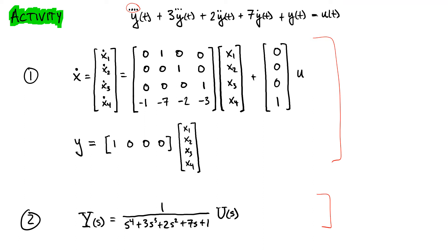One thing to mention as we look at this is the fact that we have a fourth-order differential equation. The order of that differential equation — I have one differential equation and it's order four — and that is why this ends up being a vector-valued differential equation that has four states in it, and it's also why the highest power in the denominator of this transfer function is four. So all those fours are related and important.